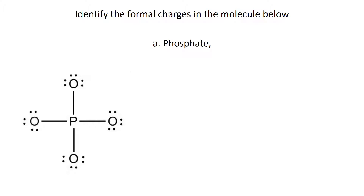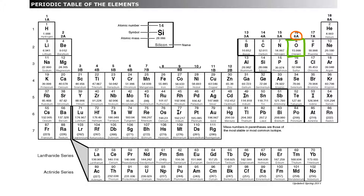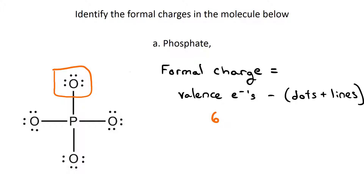For phosphate we have to choose an atom first. Let's do oxygen. The formula for formal charge is: formal charge equals valence electrons around the atom normally, minus the dots and the lines. Oxygen is in group 6A, which means it has six valence electrons.